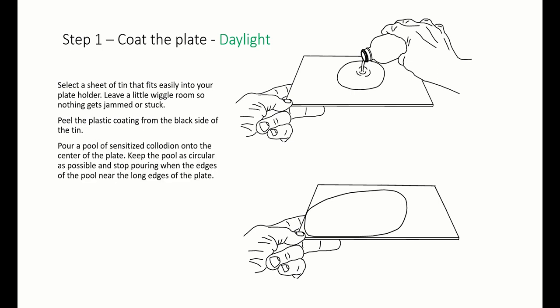Pour a pool of sensitized collodion onto the center of the plate. Keep the pool as circular as possible and stop pouring when the edges of the pool near the long sides of the plate. Tip the plate gently toward you and to the left. This will cause the collodion pool to flow toward the front left corner.